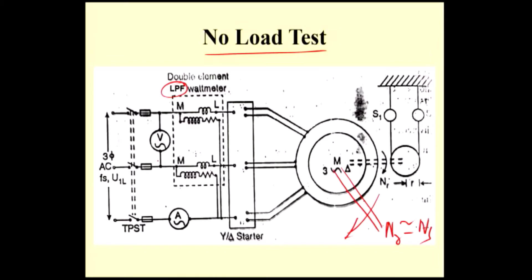In a transformer, how you conduct the open circuit test — you give the rated voltage. For the short circuit test, you make the secondary winding short circuit or give the rated current. Similarly here, you have to give the rated voltage. For example, if it is a 400V or 600V motor, you set the rated voltage of 600V. At that time, you record the current and power. These three values — V0, I0, and W0 — you have to take.